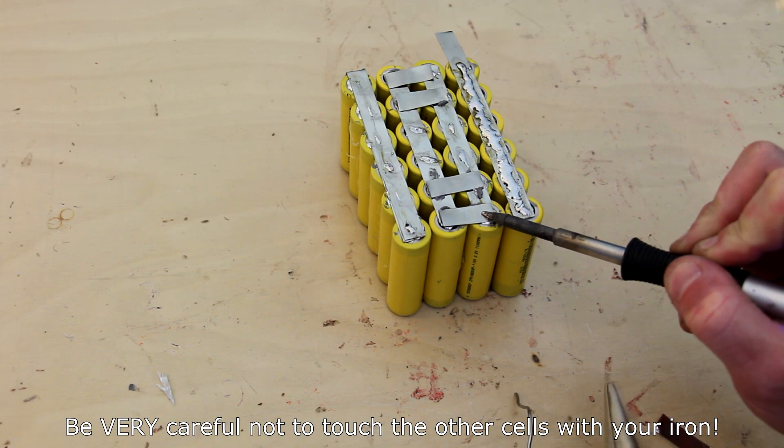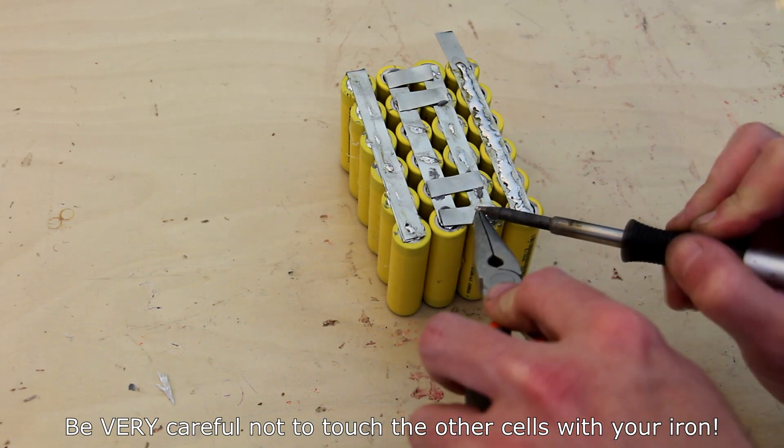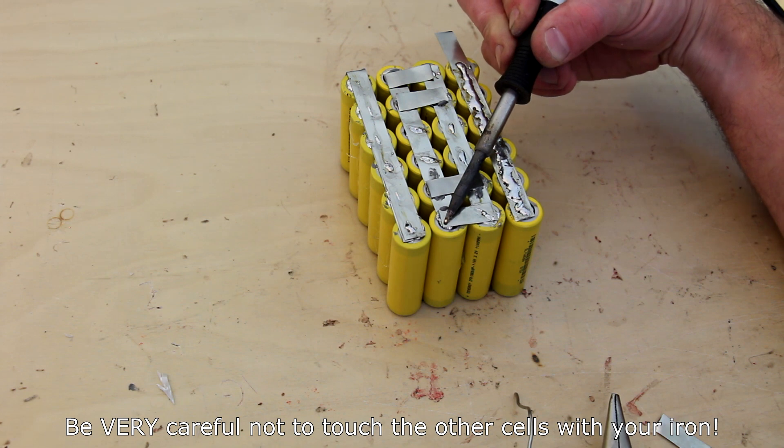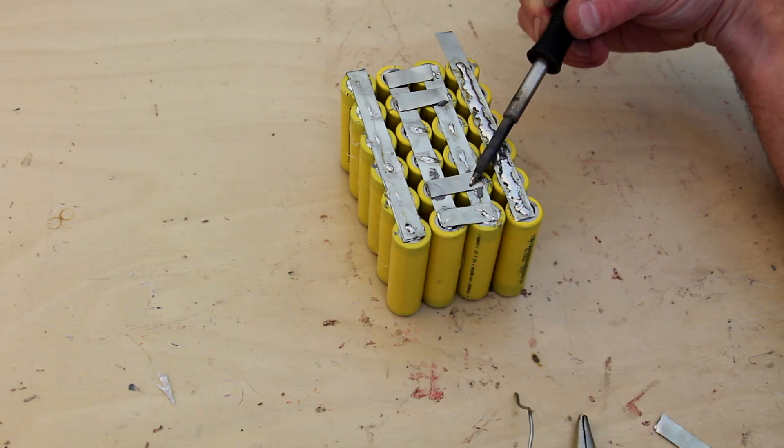The technique here is the same as all the other nickel strips. Heat up the area as fast as possible, then hold it in place with a metal tool and remove the soldering iron after everything is liquefied and bonded.